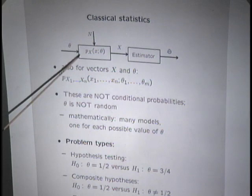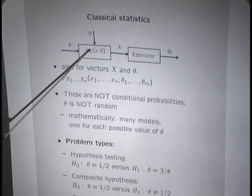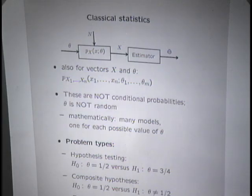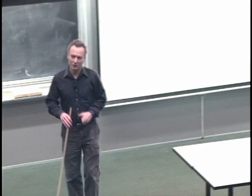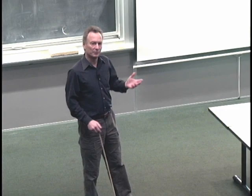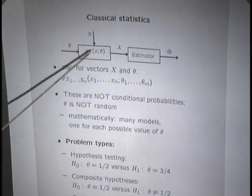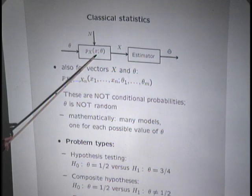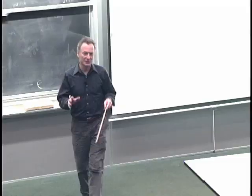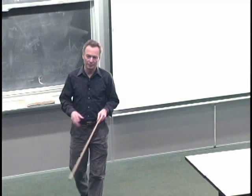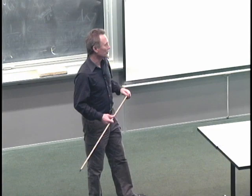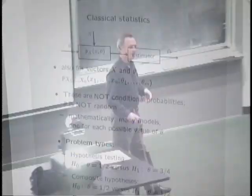The parameter does not have a probability distribution. There's nothing random about it — it's a constant. It just happens that we don't know what that constant is. The distribution of x depends on theta, but this is not a conditional distribution in the usual sense. Conditional distributions were defined when we had two random variables. To make the point that this is not a conditional distribution, we use a different notation: we put a semicolon here. For example, this might be a normal distribution with variance one but mean theta — we don't know what theta is and we want to estimate it.